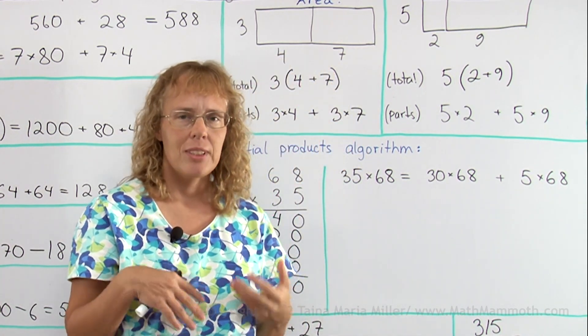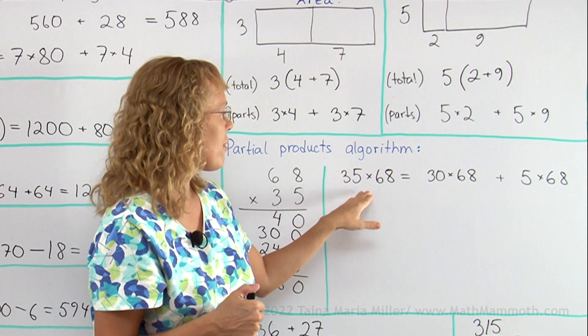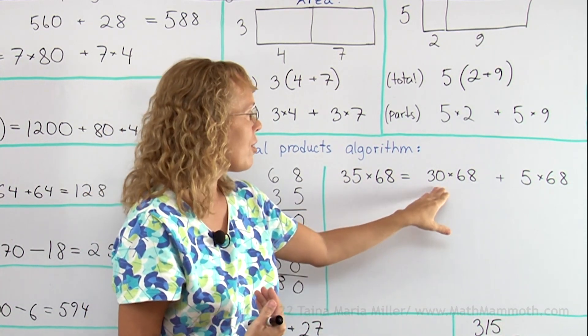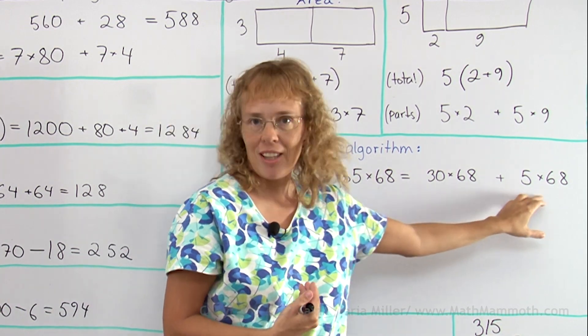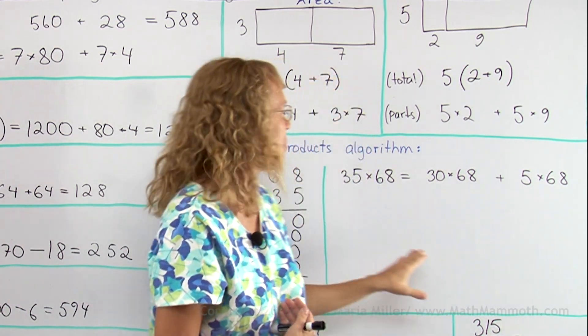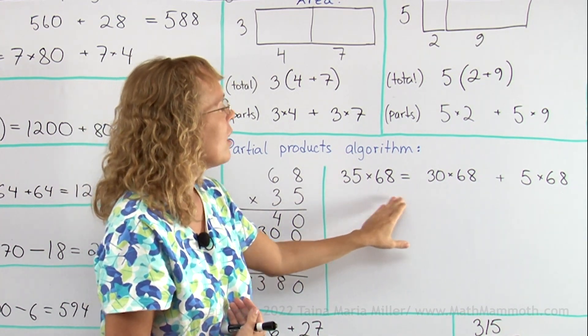If 68 was some other thing, let's say I had 35 times a car, then that definitely is equal to 30 times a car and 5 times a car. 30 cars plus 5 cars would be 35 cars.